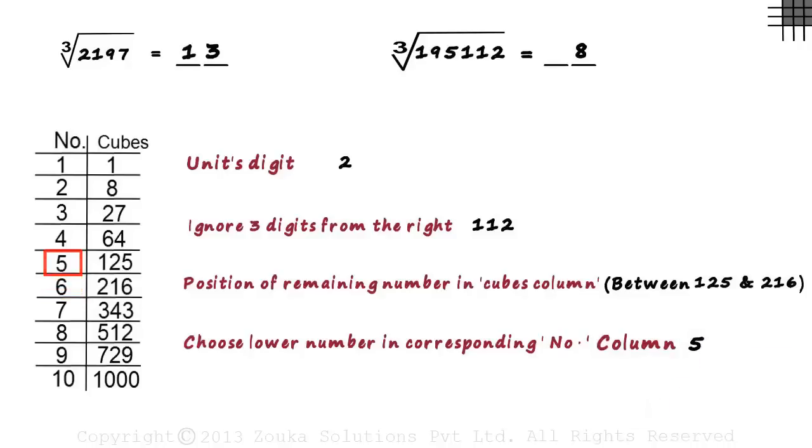And we write this number in the tens place of the answer. Hence, the cube root of 195,112 is 58.